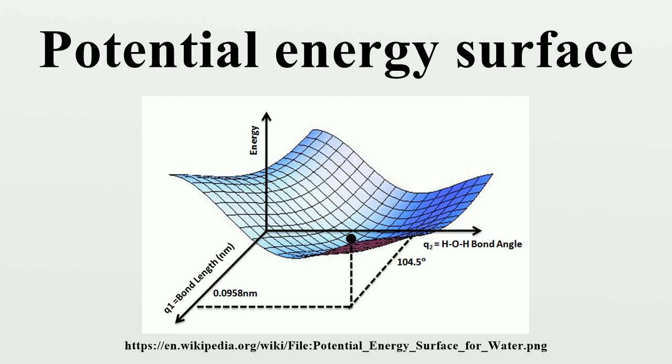The surface might define the energy as a function of one or more coordinates. If there is only one coordinate, the surface is called a potential energy curve or energy profile. An example is the Morse potential. It is helpful to use the analogy of a landscape.